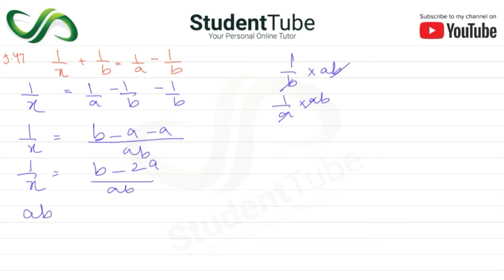Cross multiplication gives ab on this side from 1, and x becomes (b - 2a) on the other side. Now we will divide both sides by x.